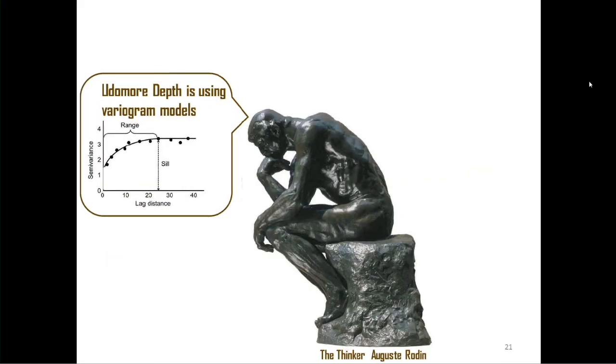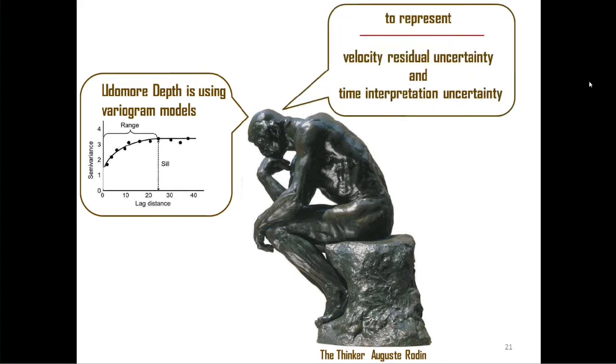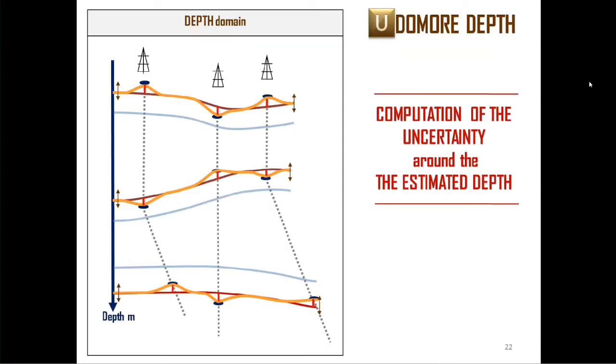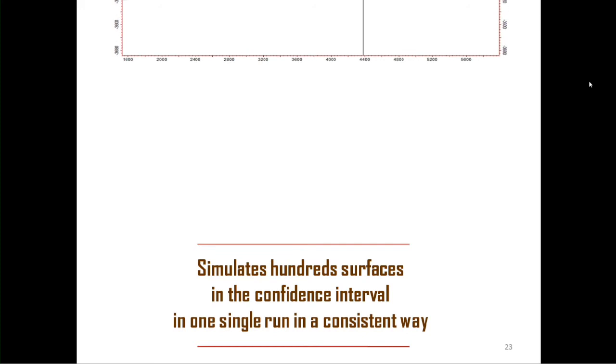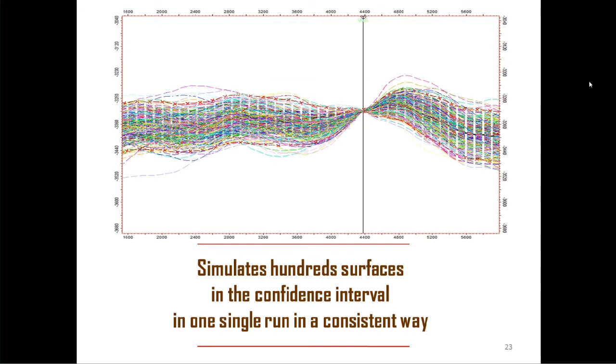UdomoDepth is using variogram models to represent velocity residual uncertainty and time interpretation uncertainty. And what's more, we will provide you uncertainty around the best estimated depth. And we will simulate hundreds of facies in the confidence interval in one single run in a consistent way, where you could save plenty of time.